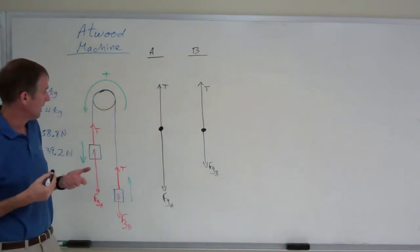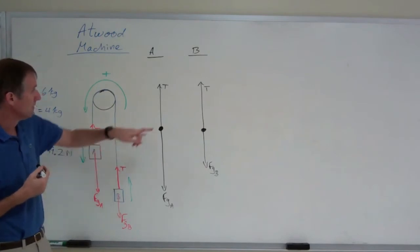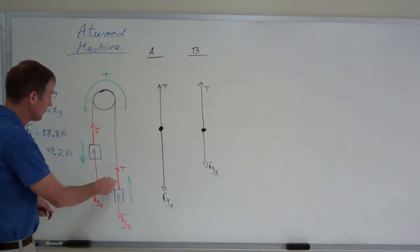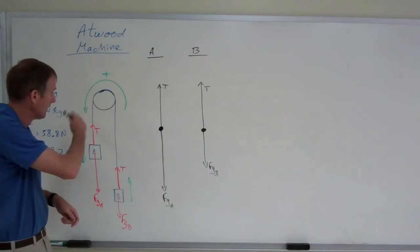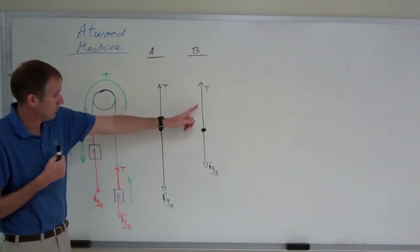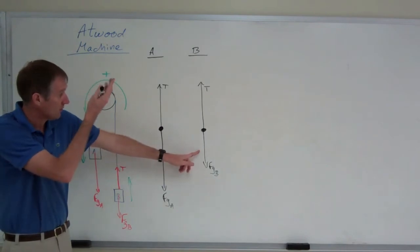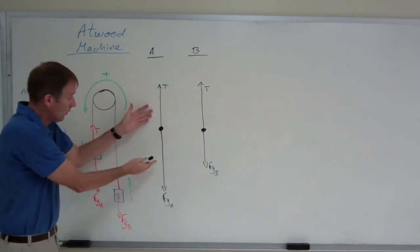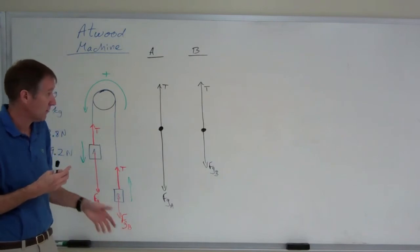Notice that these two tensions are the same. Provided that we have negligible mass and friction in the pulley, then the two tensions are the same. The tension remains the same throughout the string on either side of the pulley. Those two should be drawn the same length. That should be longer than the weight. That's why B accelerates up. This tension should be less than that weight. That's why A accelerates down.